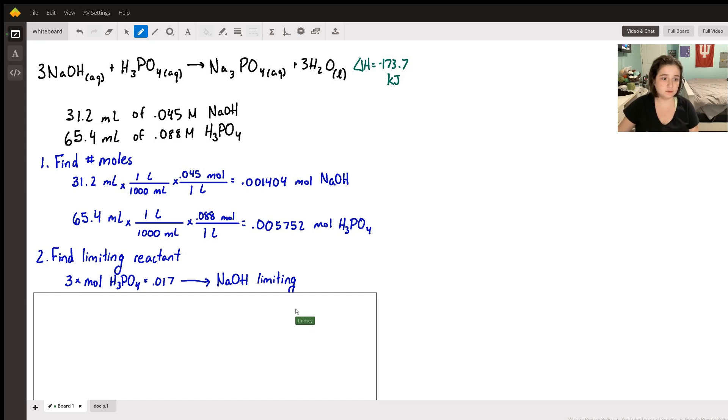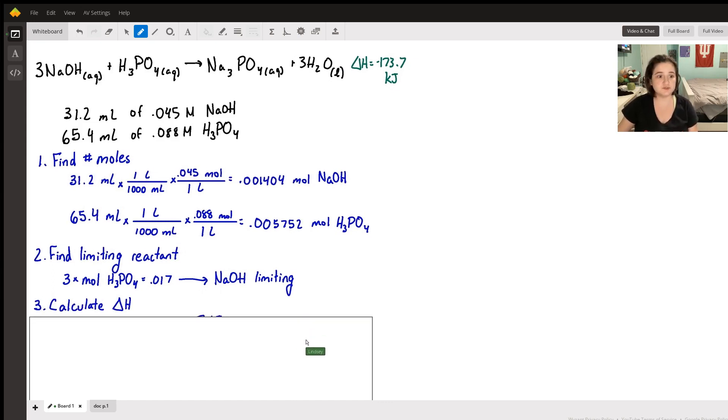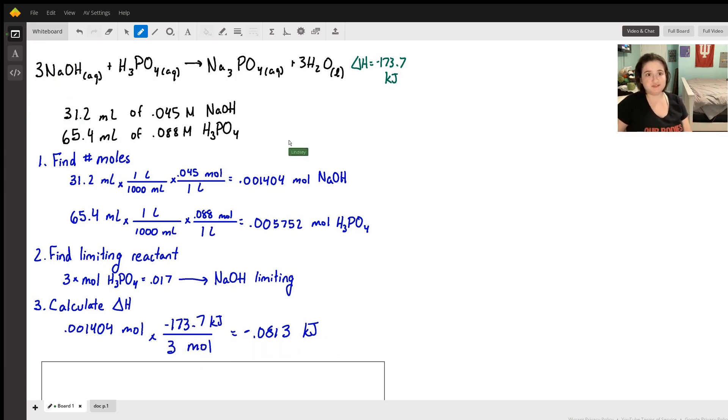Our third step is to calculate delta H. We're going to put our moles of sodium hydroxide, because that's our limiting reactant, times our delta H over three moles, because we have a three coefficient in front of our NaOH. That gives us negative 0.0813 kilojoules. I hope this helped.